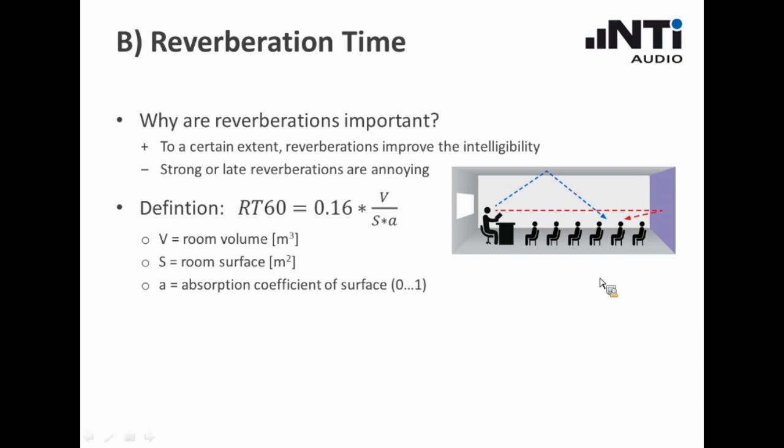How do we determine this reverberation time? Here we have the Sabine formula, which says that the RT60 value can be calculated with these parameters. V stands for the volume of the room, S is the total surface of the room, and a is the absorption coefficient of the surface. In reality, it is not that simple, because you have different surfaces in the room. Maybe you have a carpet floor, you have a wooden ceiling, you have a concrete wall, etc. So you have to determine the surface multiplied by the corresponding absorption coefficient of that surface, and add each of these terms together to this overall denominator here.